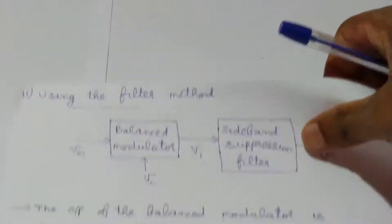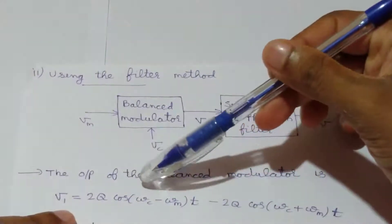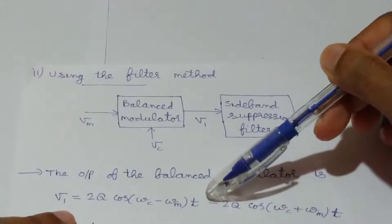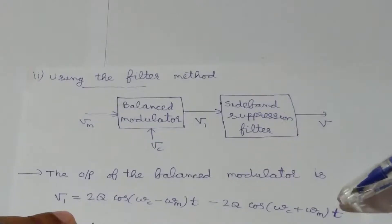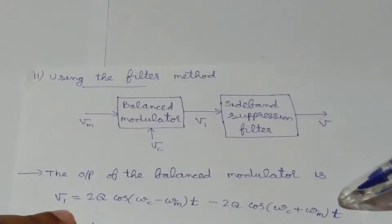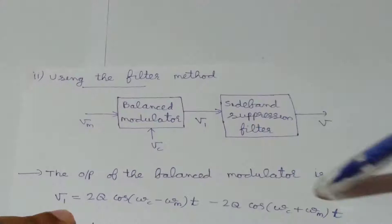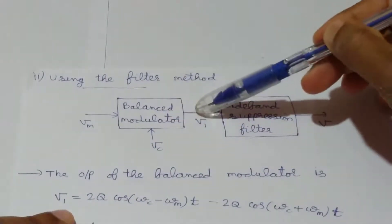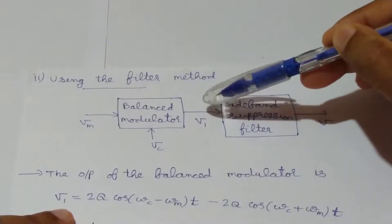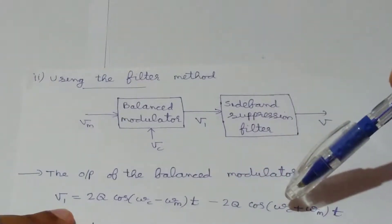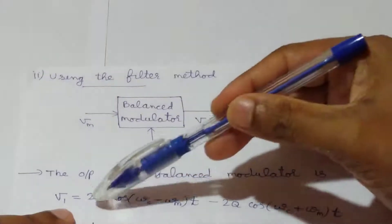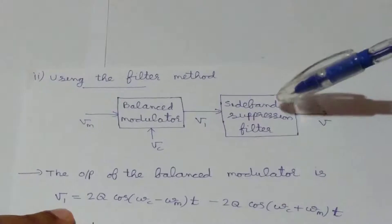The output of the balanced modulator V1 is equal to 2q·cos((ωc − ωm)t) minus 2q·cos((ωc + ωm)t). We have already derived this equation in our previous class for generation of DSBSC signal by using the balanced modulator method — you can go through that video class to get a clear idea about this equation. So we have this double sideband suppressed carrier signal at the output of the balanced modulator, and in vestigial sideband modulation technique we will transmit one sideband completely along with a fraction of the other sideband.